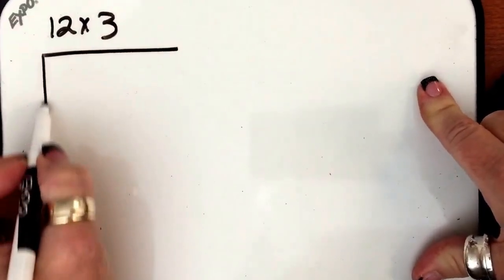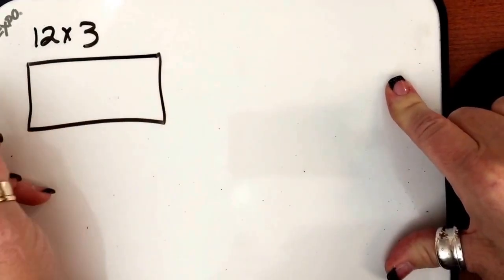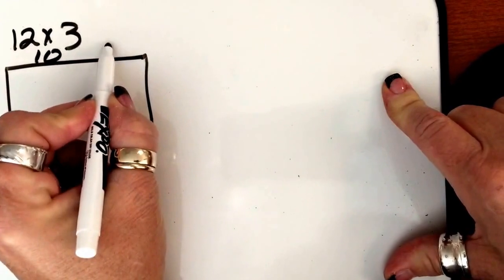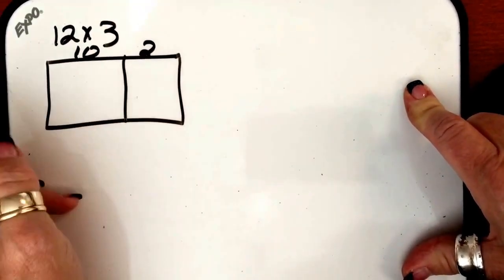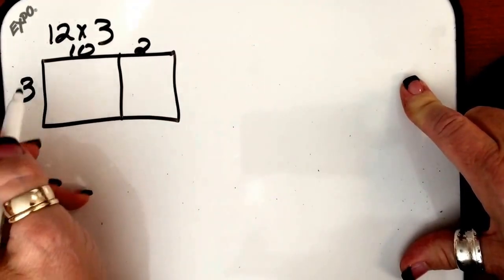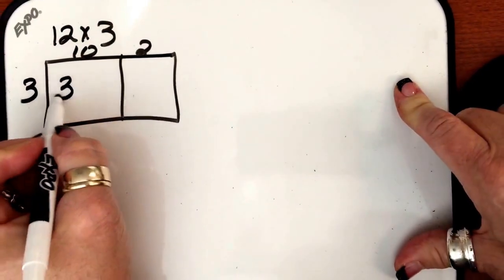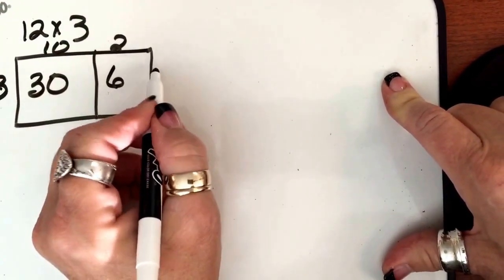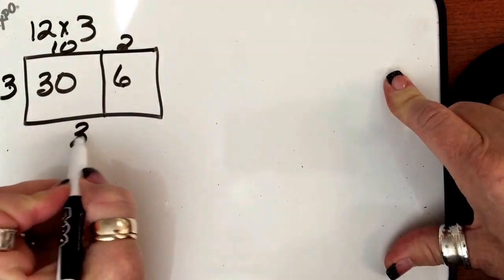And you remember when we do the array, we're looking at what does 12 mean? 12 means a 10 and 2, and we're multiplying it times 3. So 3 times 10 is 30, and 3 times 2 is 6, so the answer to this is 36.